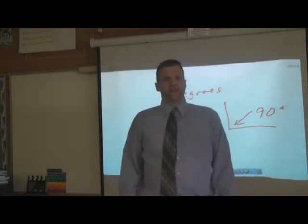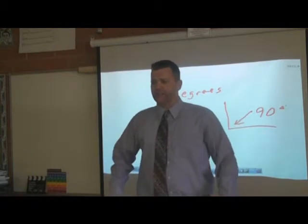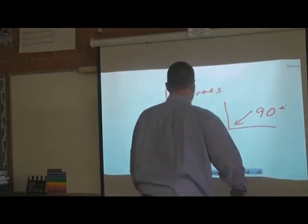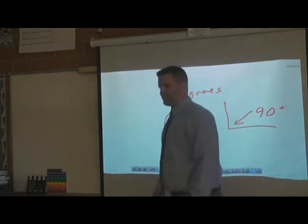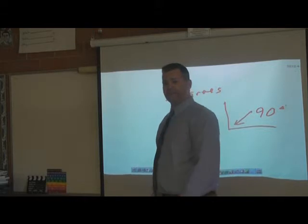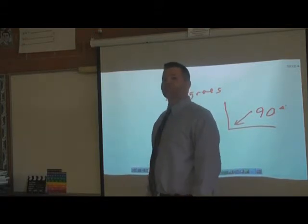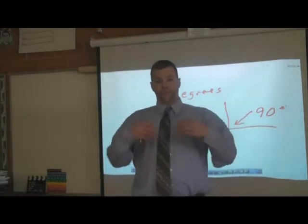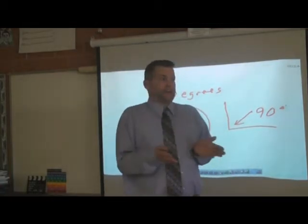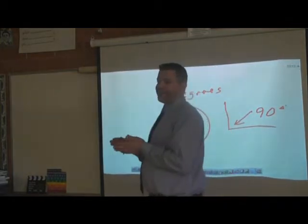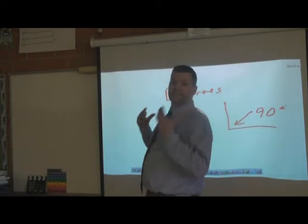What if I don't go 90 degrees or 180 degrees? What if I go three 90 degree turns? That's a 270 degree turn. So, if I'm back at zero degrees and I turn 90, another 90, and another 90 degrees, I'm at 270 degrees.